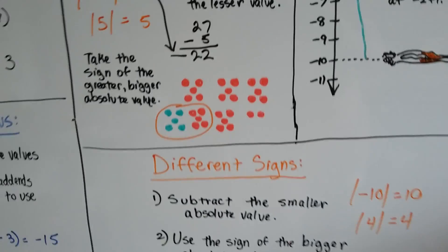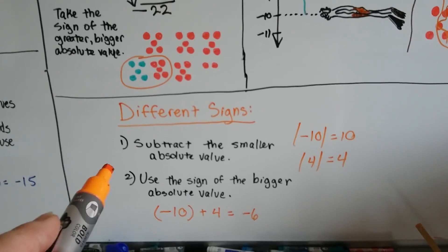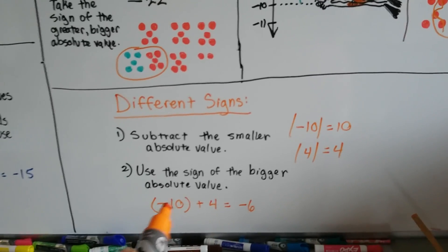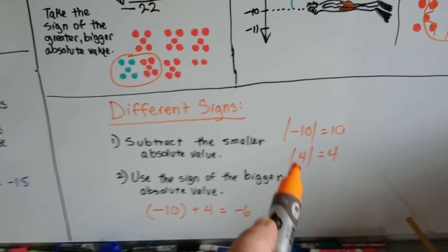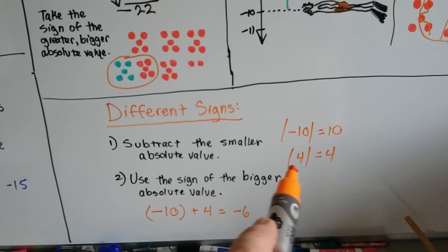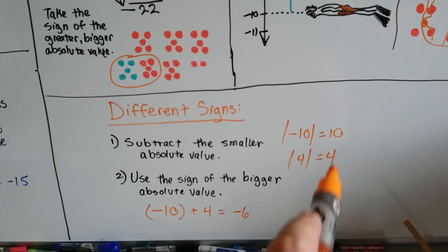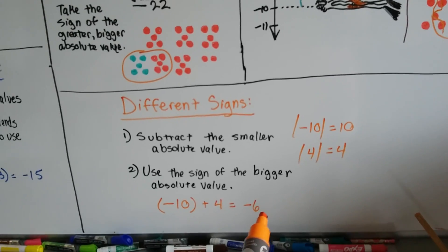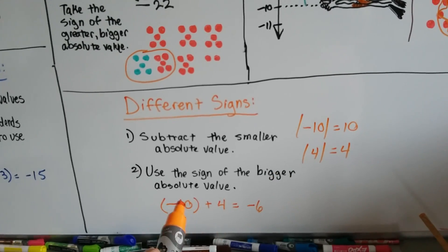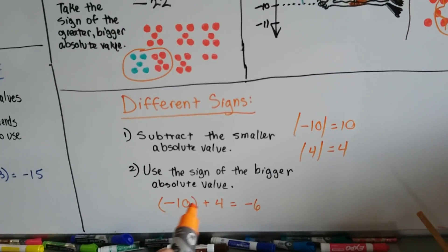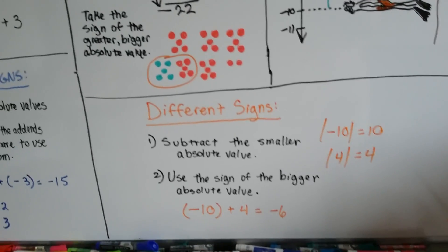When you have different signs, you subtract the smaller absolute value. We have negative 10 and 4. The absolute value of negative 10 is 10 — it's 10 spaces from 0. 4 is 4 spaces from 0. We subtract the smaller one: 4 from 10 gives 6. We use the sign of the larger addend, and 10 is larger, so we use its sign — negative. The answer is negative 6.